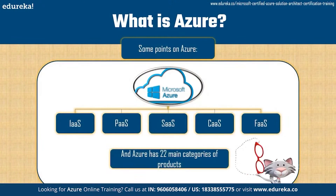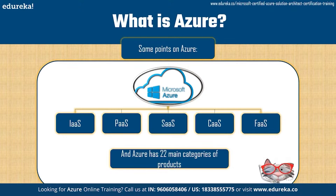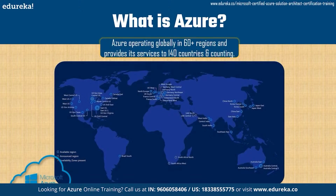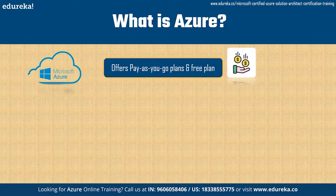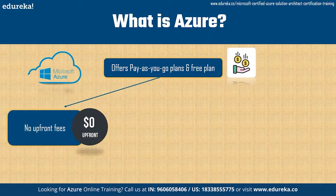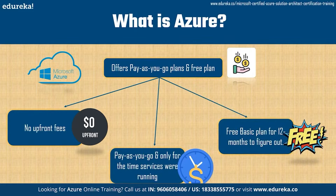Just like every other cloud platform, Azure provides five distinct types of services: Infrastructure as a Service, Platform as a Service, Software as a Service, Container as a Service, and Functions as a Service. Azure has 22 main categories of products and operates globally in 60-plus regions, providing services to 140 countries and counting. Azure provides pay-as-you-go plans with no upfront fees, and also offers a free basic plan that is valid for 12 months so you can tinker around and see if you like it.